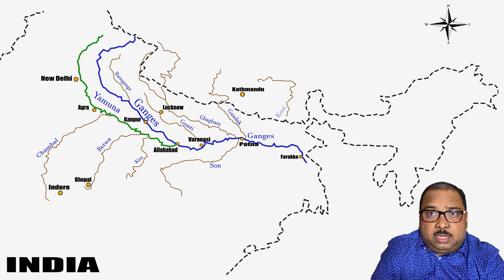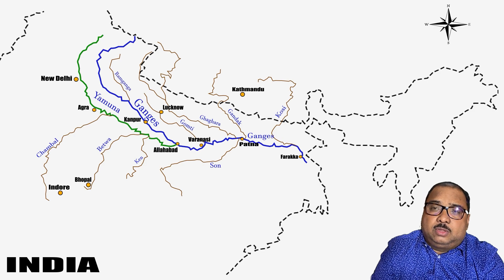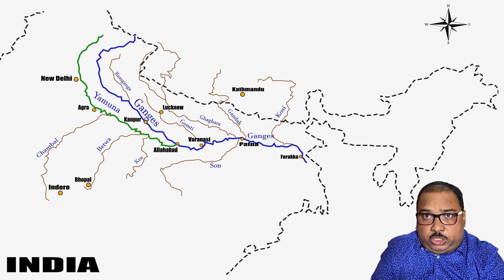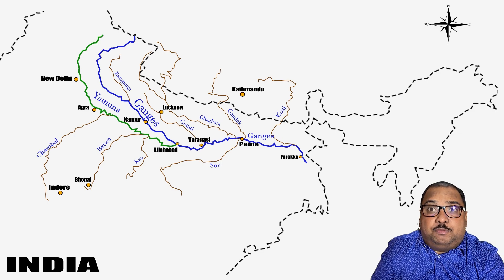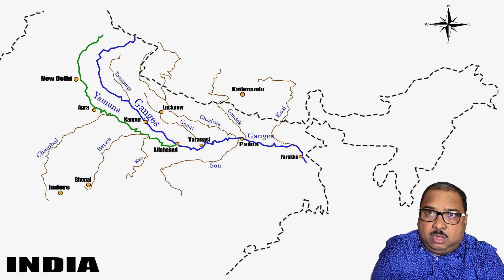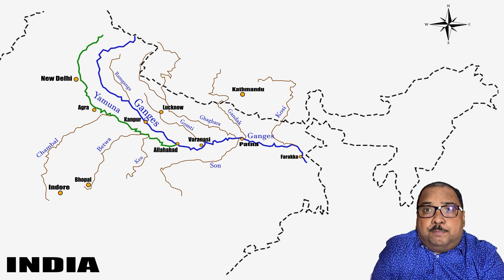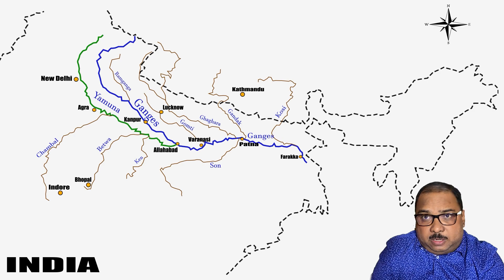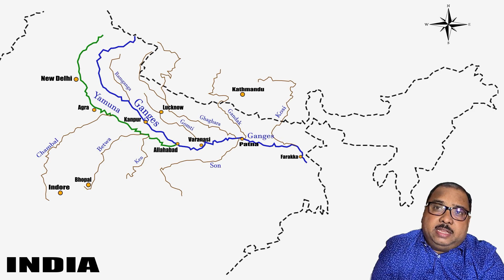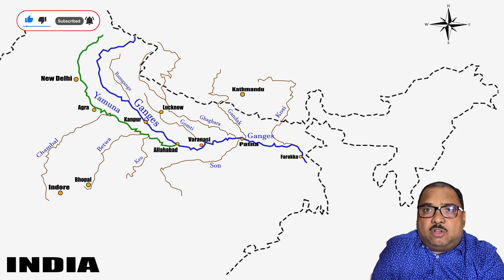Ram Ganga and Gomti meet Ganga in the state of Uttar Pradesh. Ghaghra, Gandak and Koshi — these three rivers meet Ganga in the state of Bihar. Koshi river is particularly important because every year it is responsible for floods in the state of Bihar. That is why Koshi was known as the Sorrow of Bihar. After meandering its course through Bihar and Jharkhand, river Ganga enters the state of West Bengal.